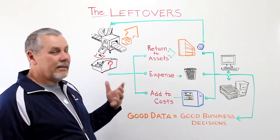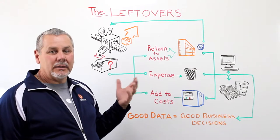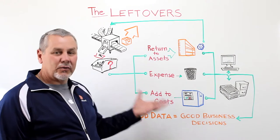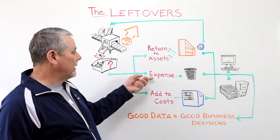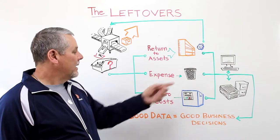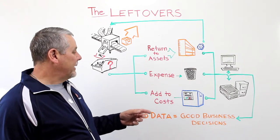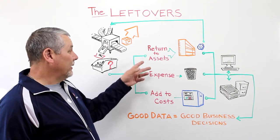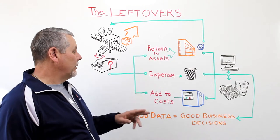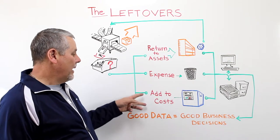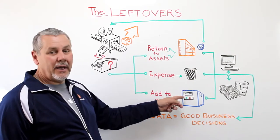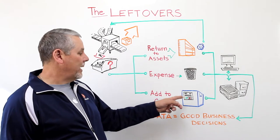The second one is it might be just literally scrap — it has no usefulness — and so they can choose just to expense it and then throw it away. The third one is, regardless of whether it could be returned and used or thrown away, you just choose to add it to the cost of the final product that you're manufacturing.